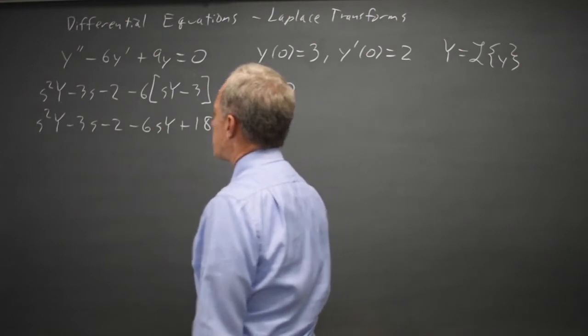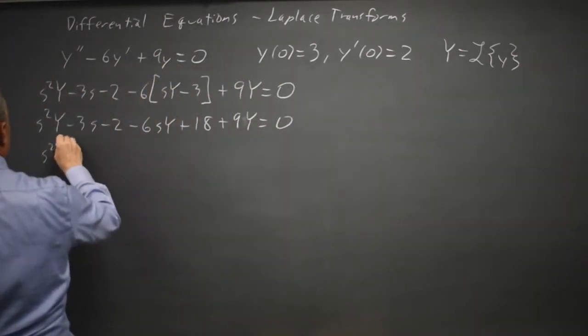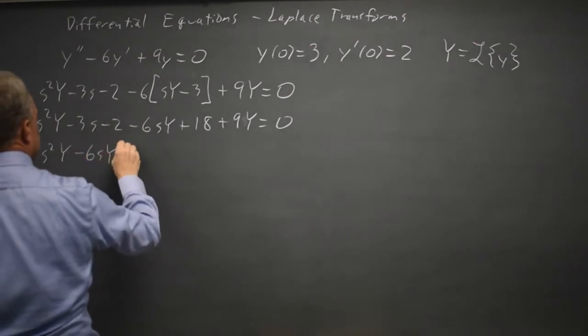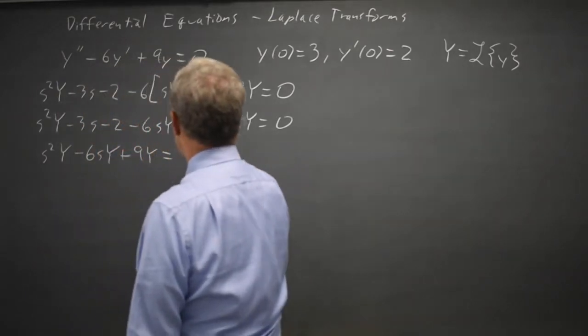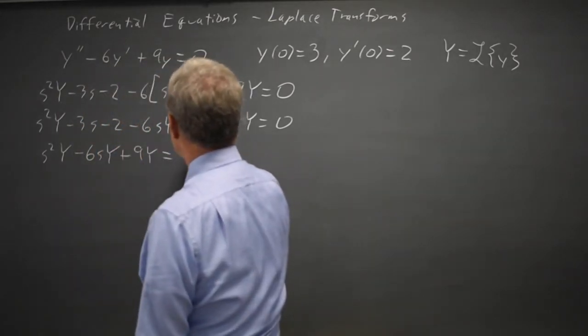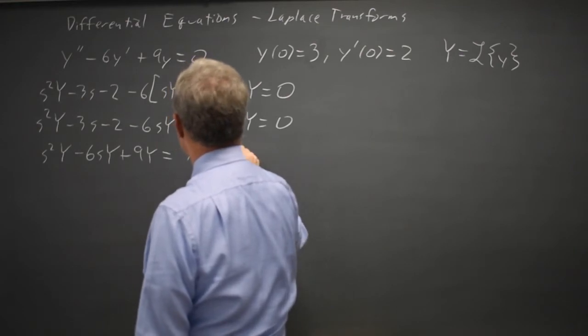Moving everything without a Y to the right hand side I'm left with s squared Y minus 6sY plus 9Y equals 3s minus 16 when I move it to the right.